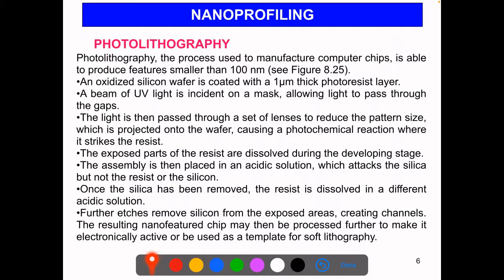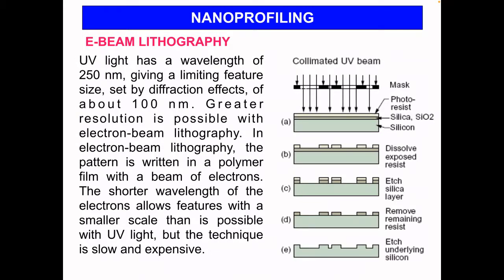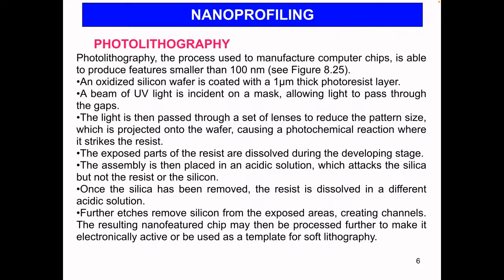Further etches remove silicon from the exposed areas, creating channels. The resulting nano-featured chip may then be processed further to make it electronically active or be used as a template for soft lithography. These lithographic tools are also top-down approaches. The important part in photolithography is that the feature size is limited by the wavelength of the light used.